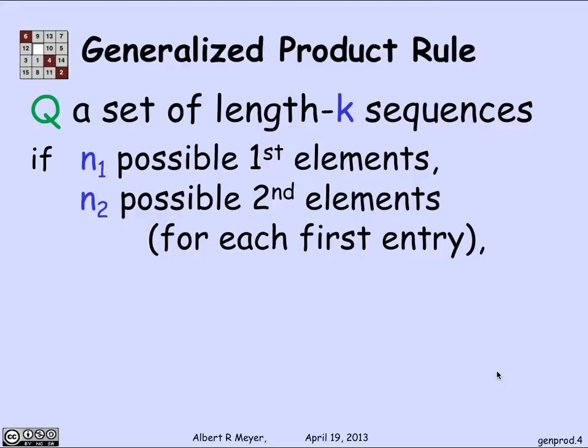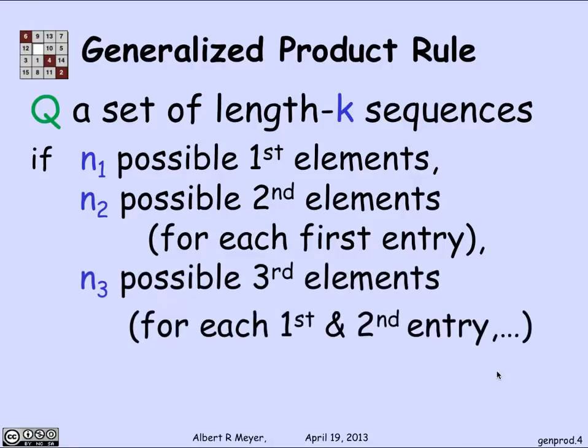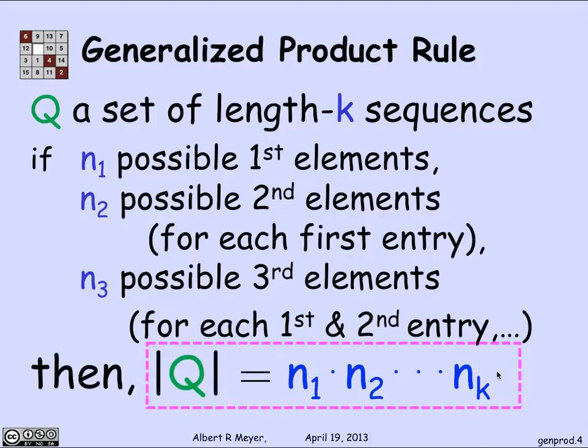And likewise, if you look at the number of possible third coordinates given the first two, it's n3, and it's uniform no matter what the first two are. Then if you have this kind of setup, which is exactly what happens when you're picking one student after another and they can't repeat, you discover that the length K sequences with n1 first possible choices, n2 second possible choices, down through nk, kth possible choices is n1 through nk. So that's the statement of the generalized product rule in the magenta box.